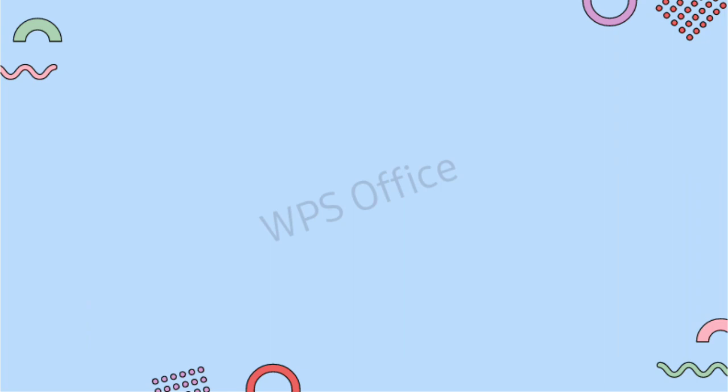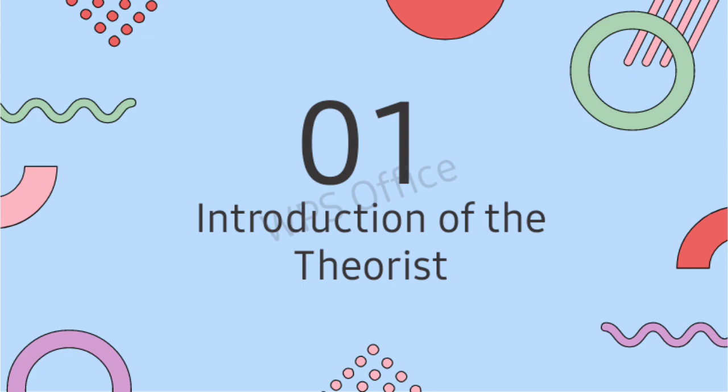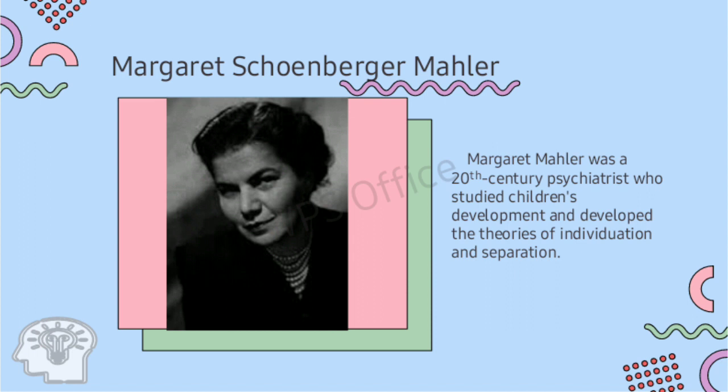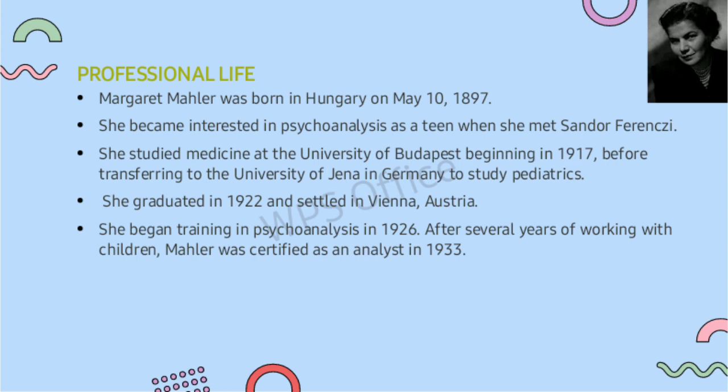Margaret Schoenberger-Mahler was a 20th century psychiatrist who studied children's development and developed the theories of individuation and separation. Margaret Mahler was born in Hungary on May 10, 1897. She became interested in psychoanalysis as a teen when she met Sandor Ferenczi. She studied medicine at the University of Budapest beginning in 1917 before transferring to the University of Jena in Germany to study pediatrics. She graduated in 1922, settled in Vienna, Austria, and began training in psychoanalysis in 1926. After several years of working with children, Mahler was certified as an analyst in 1933.